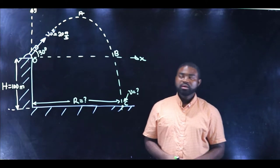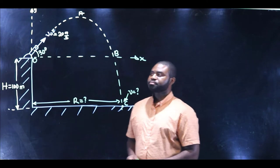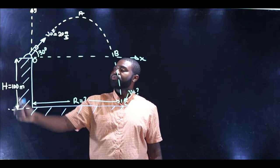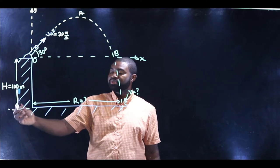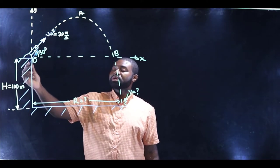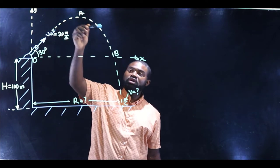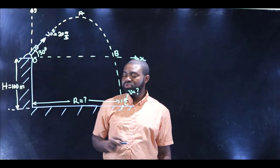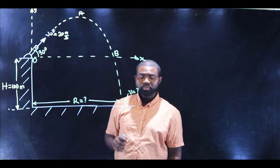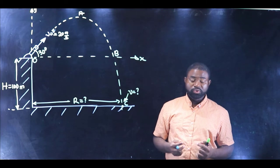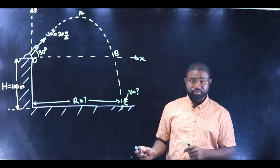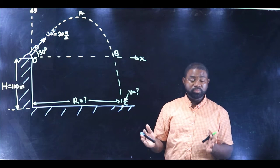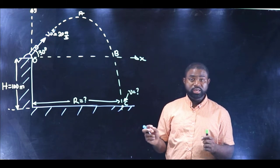We have a projectile problem in which a ball is projected from the top of a cliff or building a hundred meters above the ground at an angle of 30 degrees. The ball goes up and then hits the ground at a position C. The question is to calculate the horizontal range. This problem is a little different from the problems we have been doing so far, but we will use the same logic and procedure.